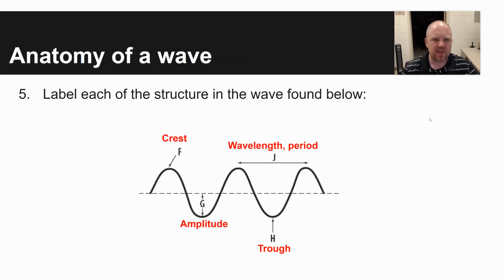The last problem here has to do with the anatomy of a wave. It says label each of the structures in the wave found below. So this is a transverse wave. The top of a wave, f, is the crest of a wave. The bottom of a wave, h, is the trough.